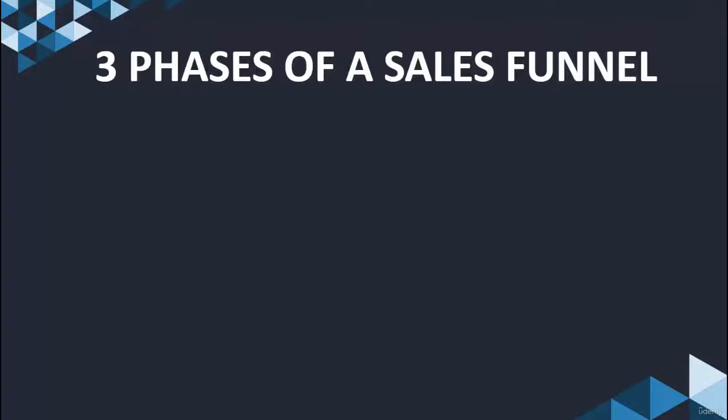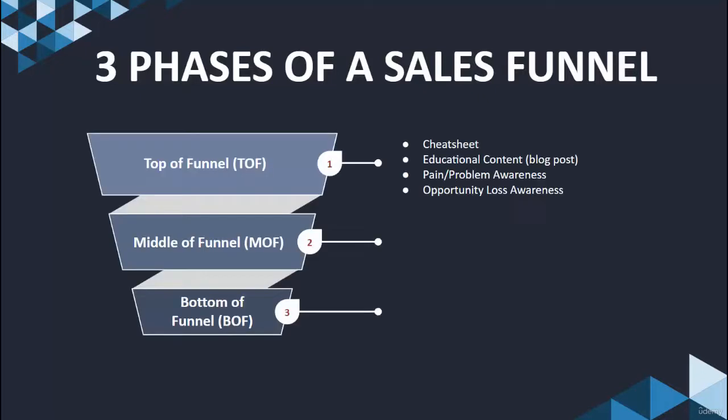All right, so let's talk about the three phases of a sales funnel. This is going to be like a 50,000 foot view of what a sales funnel looks like. We have three particular areas that we really look to have as our key points and elements within our sales funnel, so that we know where everybody's at at each particular stage. These three phases are very simply top of funnel, middle of funnel, and bottom of funnel.